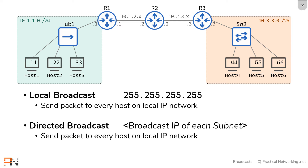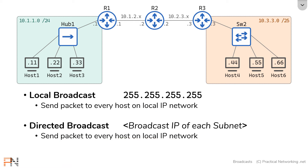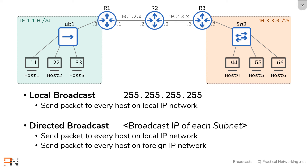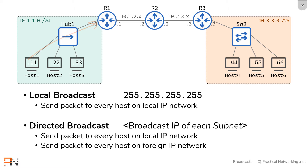You might be asking yourself: why do we have two different broadcast IP addresses that do the exact same thing? The answer is that the directed broadcast can actually do something else that the local broadcast cannot. The directed broadcast can also be used to send a packet to every host on a foreign IP network. Just like host 1 used the directed broadcast to reach every member of its own network, it can also use the directed broadcast IP address of a foreign network to speak to every member of that foreign network.